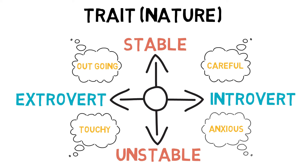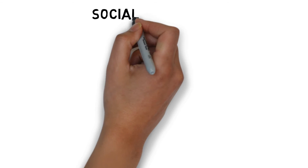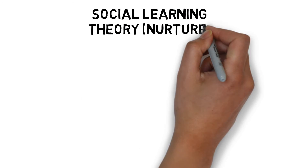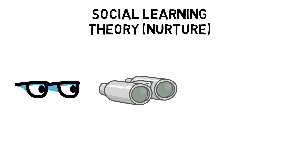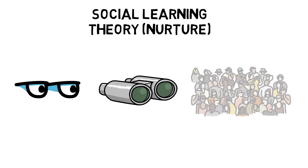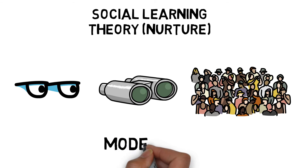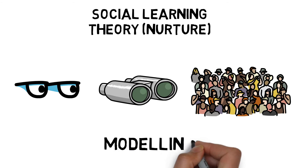Social learning theories explain behaviour as being learned through observational learning and by modelling our behaviour on what we have seen. Theorists such as Bandura also suggest that behaviour is determined by the situation — for example, a calm extrovert may get angry after a bad referee decision.